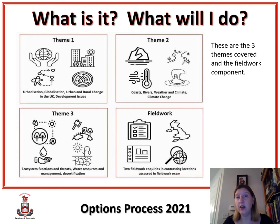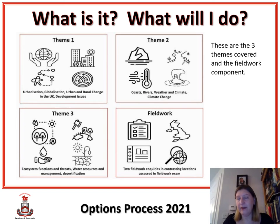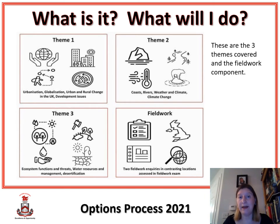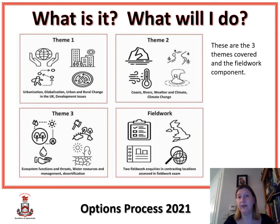In theme two we look at physical geography — rivers and coasts, weather and climate, and how we're affecting those. Theme three is our environmental geography — we look at ecosystems, where plants and animals live and how they are under threat. We look at water, how that resource is stretched, what we can do to help in the future, and how we can manage things to prevent processes like desertification, which causes issues for food and water in various parts of the world.